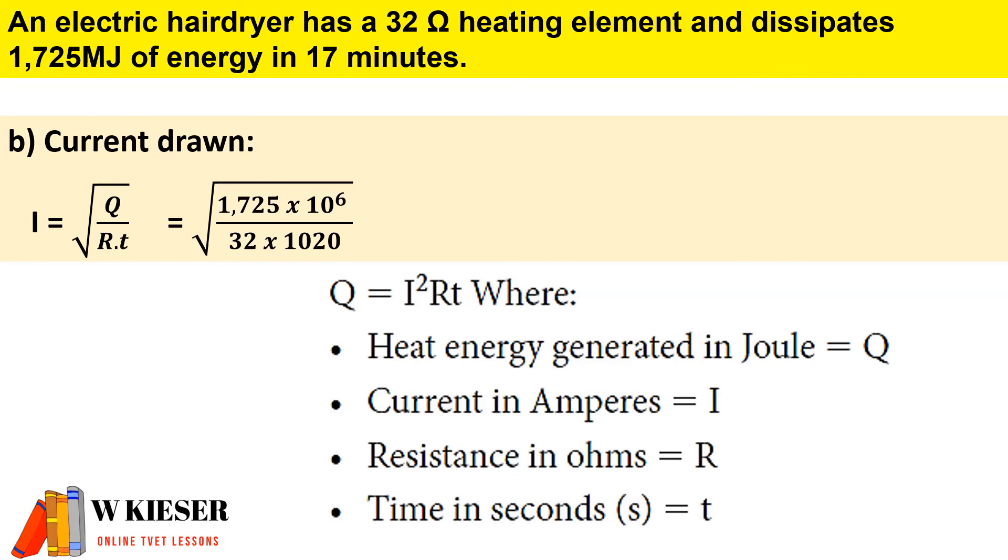The heat generated in joules, now to convert megajoules to joules, we multiply by 10 to the power of 6, divided by 32 ohms and time in seconds. Therefore, the current is 7.27 amps.